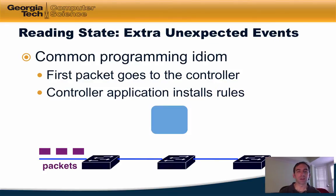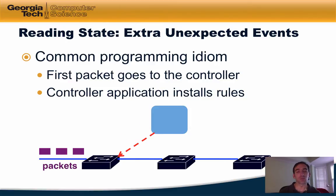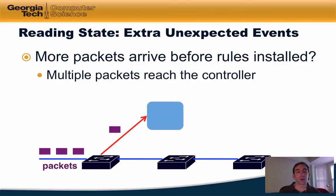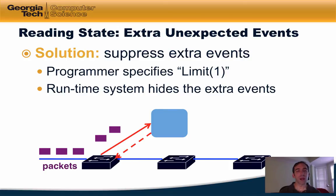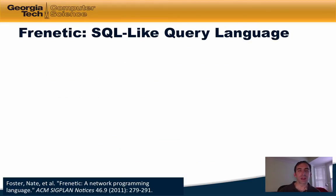Another challenge with reading network state is the common OpenFlow programming idiom, whereby if a switch does not know how to handle a packet with the existing flow table entries, it will send that packet to the controller. The controller subsequently installs rules in the switch according to that policy. But what happens when more packets arrive at the controller before the switch has the rule installed? Subsequent packets may reach the controller and the controller must figure out what to do with those packets. The solution is to suppress extra events, allowing the programmer to specify a limit whereby the runtime system prevents the controller from seeing these extra packet arrival events.